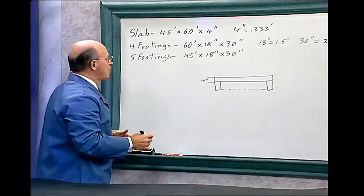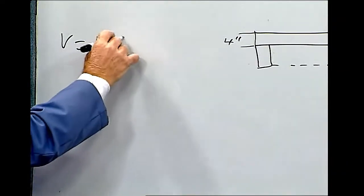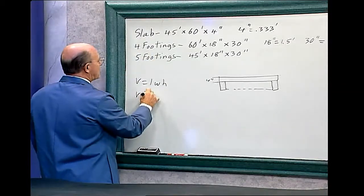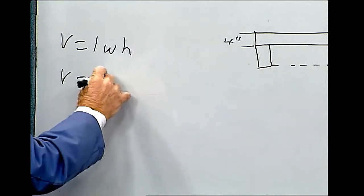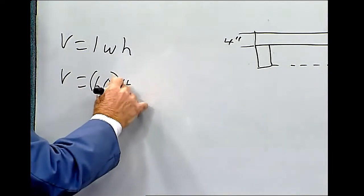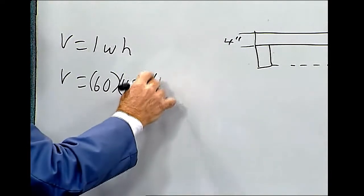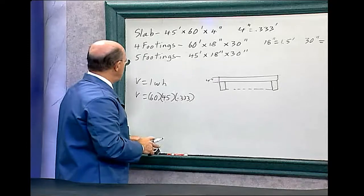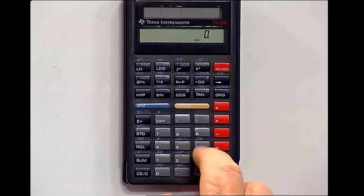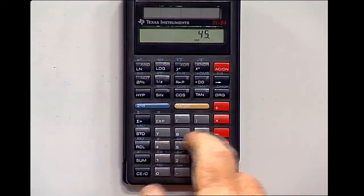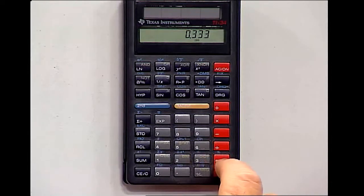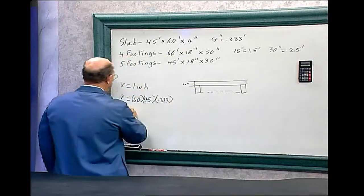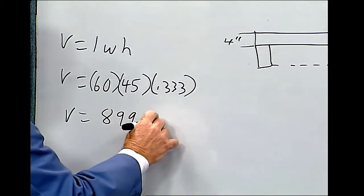So volume equals length times width times the height. Let's find the dimension for the slab first. So the volume of the slab equals the length is 60 times the width, which is 45 times the height, which is 0.333. Let's plug in the numbers here. It's 60 times 45 times 0.333 equals 899.1. So this equals the volume equals 899 cubic feet.